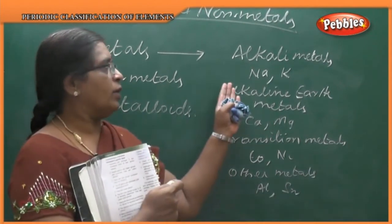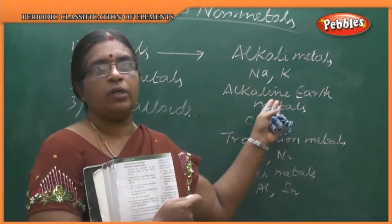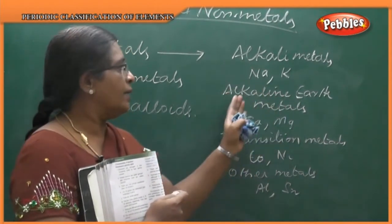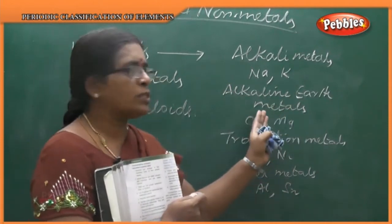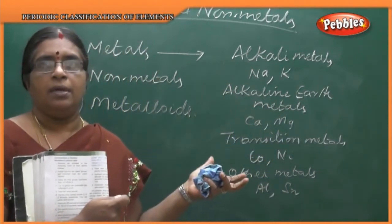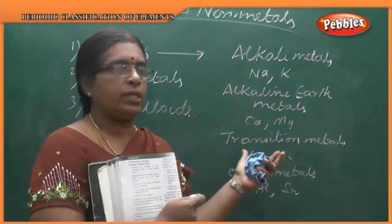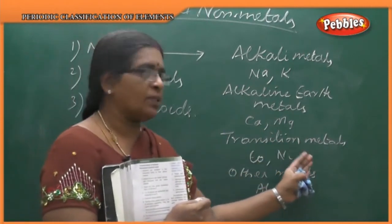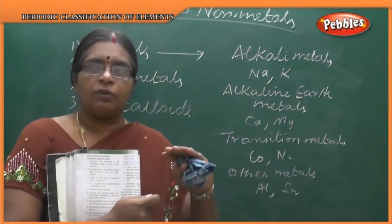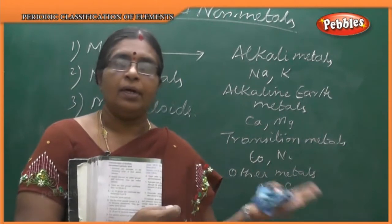Why are they called alkali metals? Because they form salts. Alkaline earth metals are mostly found in the earth's crust. Transition metals — the word 'transition' means changing from one character to another character.